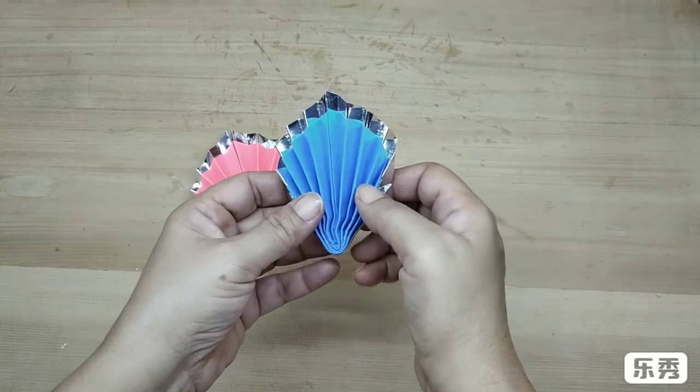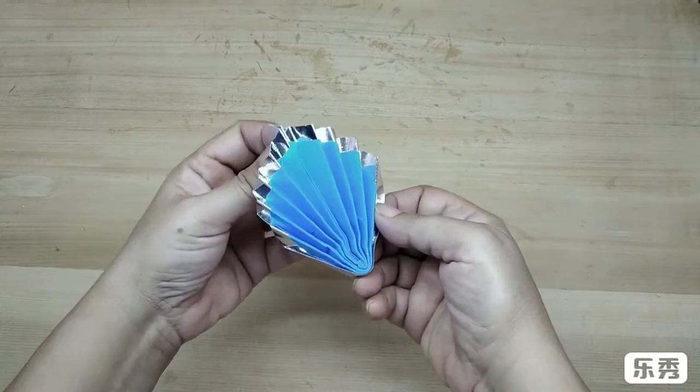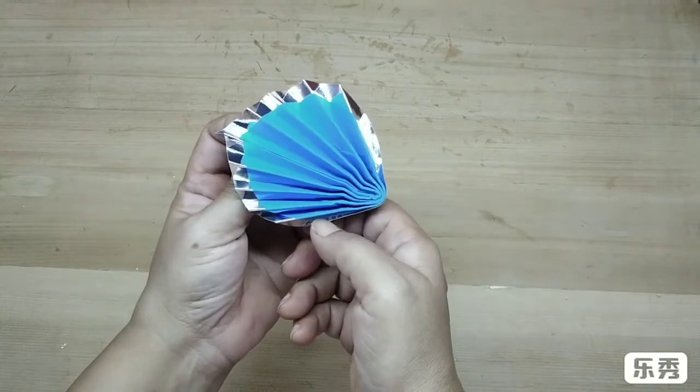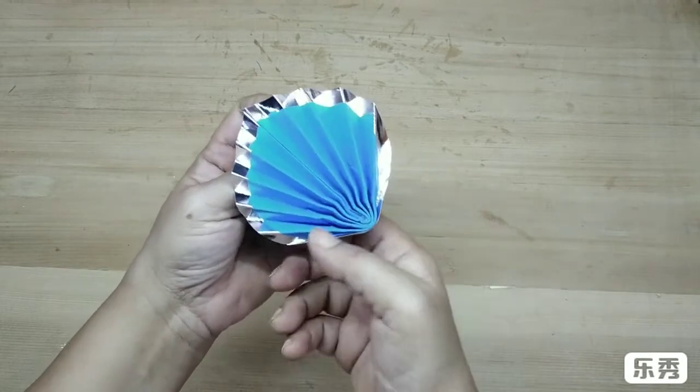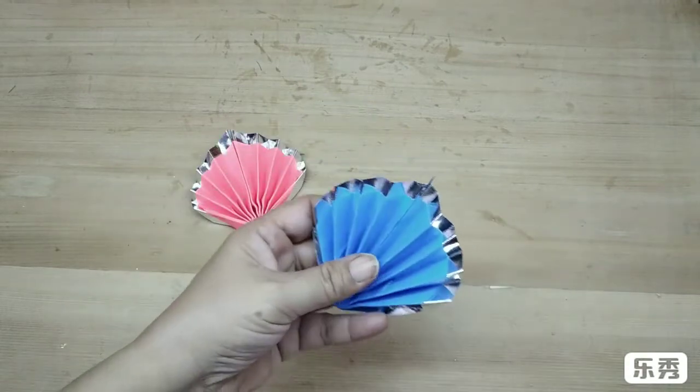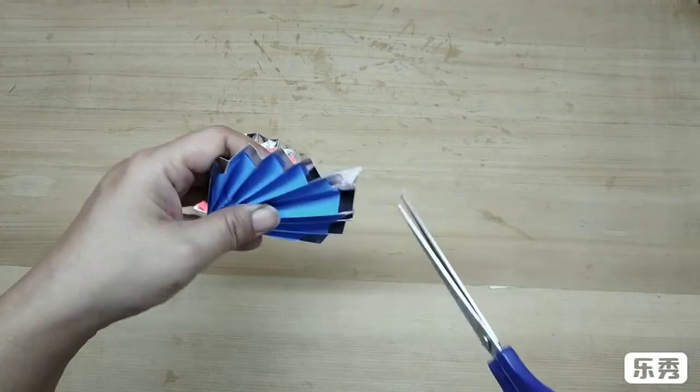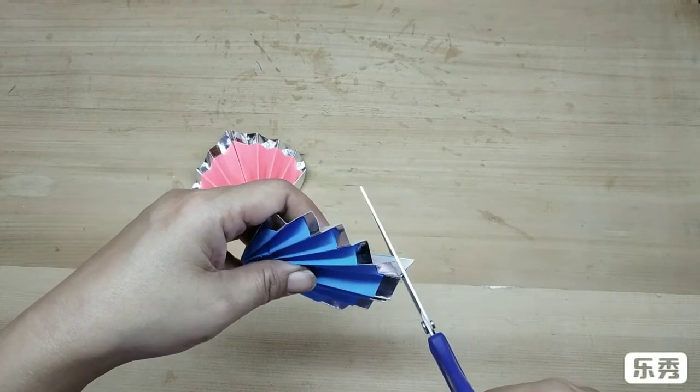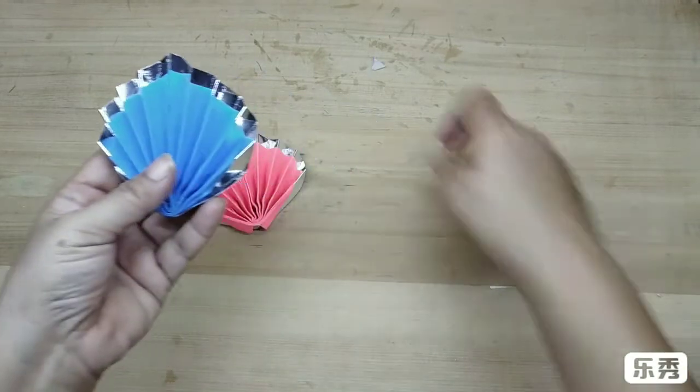So this is how it's going to look. Just let it open a bit and just cut off the triangle at the top so that it doesn't show. And this is how the fan will look.